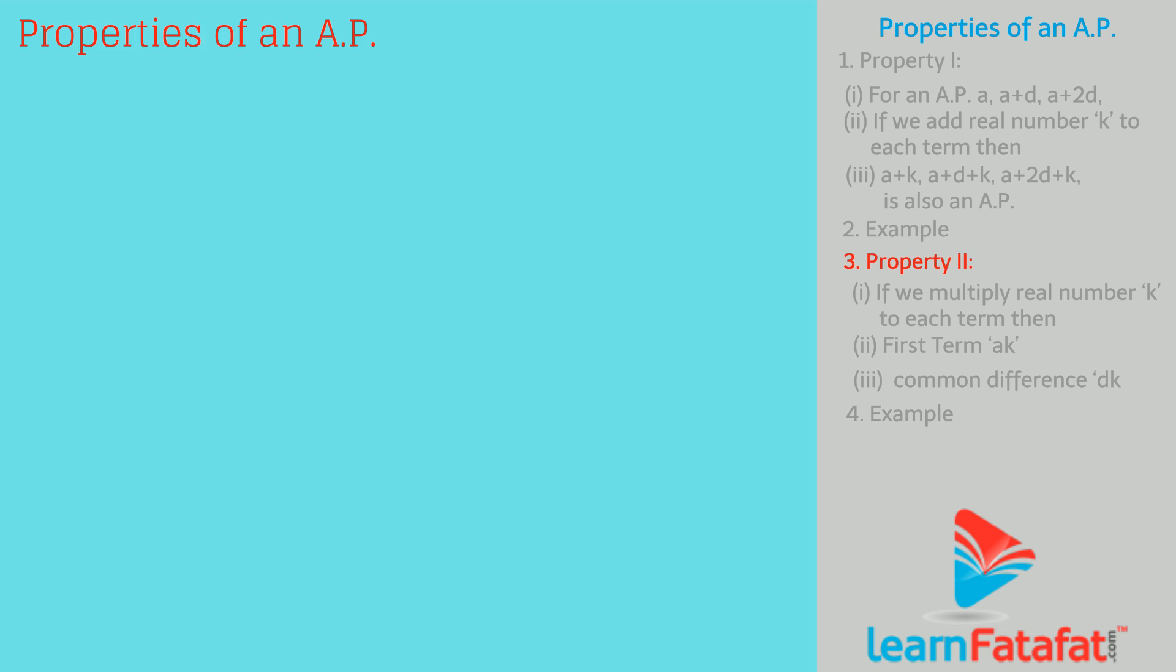Property 2: For an AP with the first term a and common difference d, if each term is multiplied by any real number k, then the new sequence is also an AP with first term ak and common difference dk.